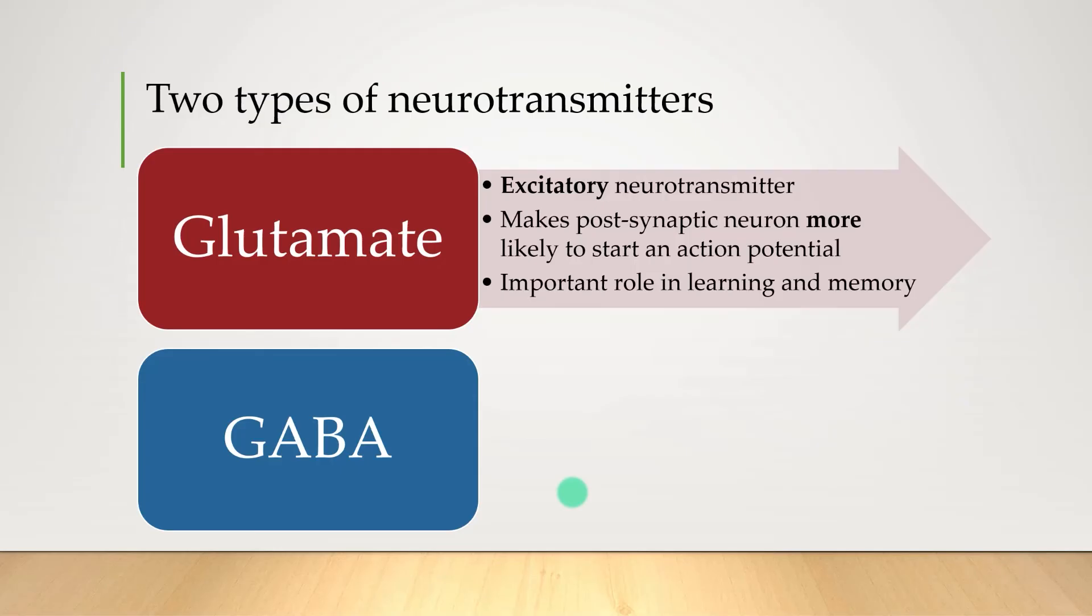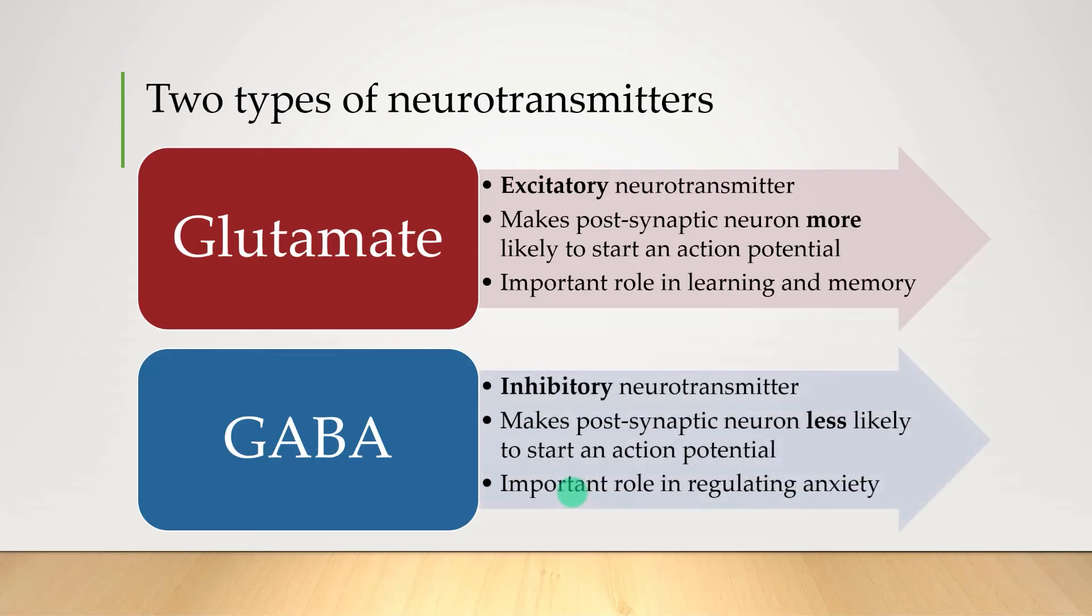On the other hand, GABA is the brain's primary inhibitory neurotransmitter. Releasing it across the synapse will make the next neuron less likely to start an action potential. And this is shown to be important in the way our brain regulates anxiety.